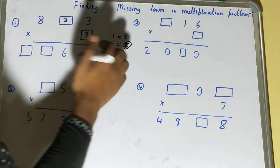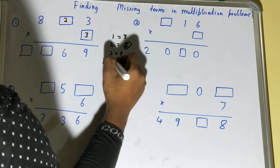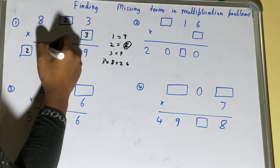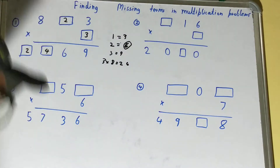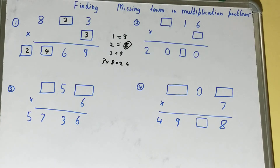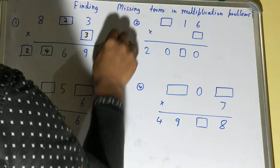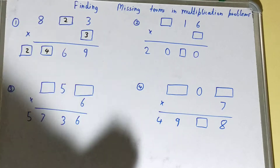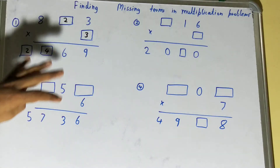Now you can directly multiply three times eight, which is 24. See how easily we can find the answer. This is why I suggested you first practice a lot of multiplication questions and then come on to this type of problem.